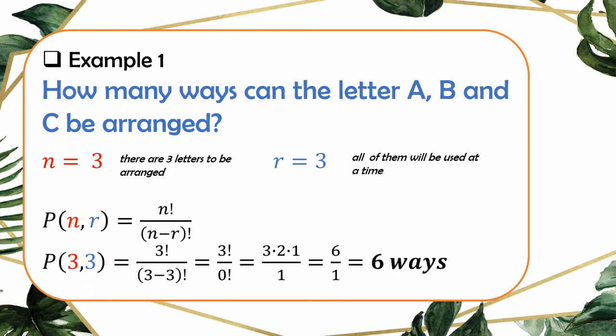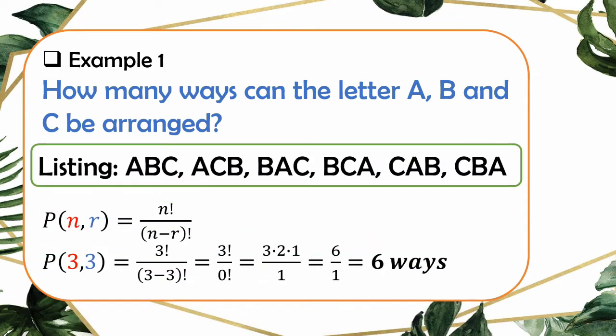So this is our formula: P(N, R) equals N factorial over (N minus R) factorial. Our N is 3 and R is 3. Substituting: 3 factorial over (3 minus 3) factorial equals 3 factorial over 0 factorial. Expanding: 3 times 2 times 1 equals 6, divided by 1 (since 0 factorial is 1), gives us 6 ways. So your answer from the listing method is confirmed by the formula — 6 arrangements.